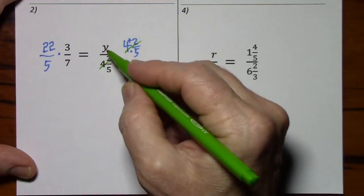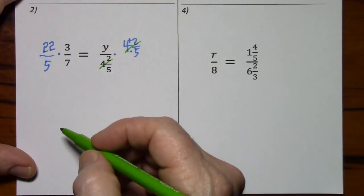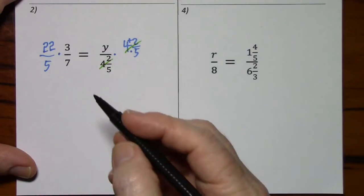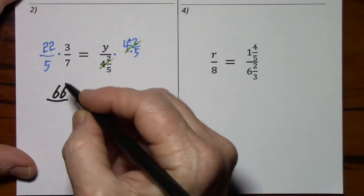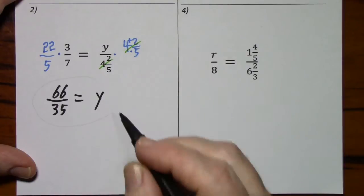Obviously, they cancel. We'll have y all by itself. Here, nothing's going to cancel. So 3 times 22 is 66. 5 times 7, 35. And we have y all by itself.